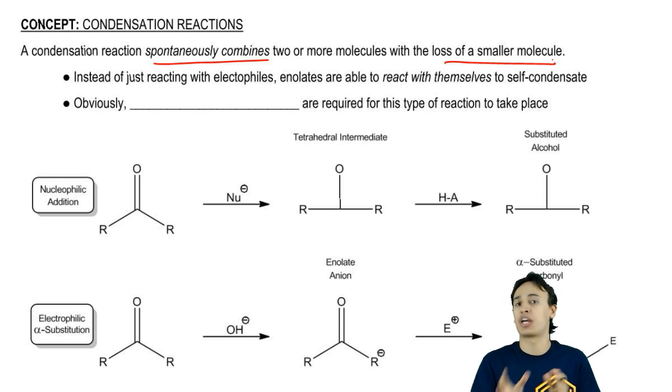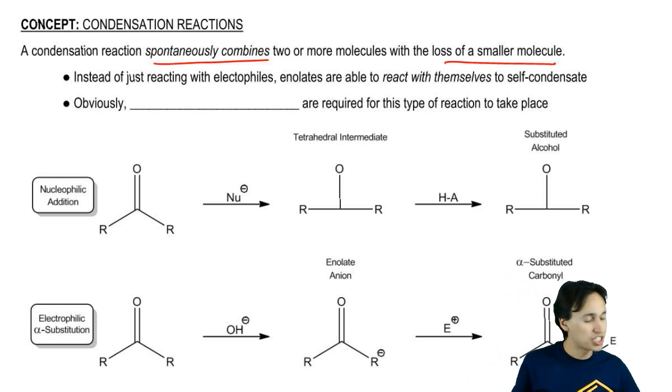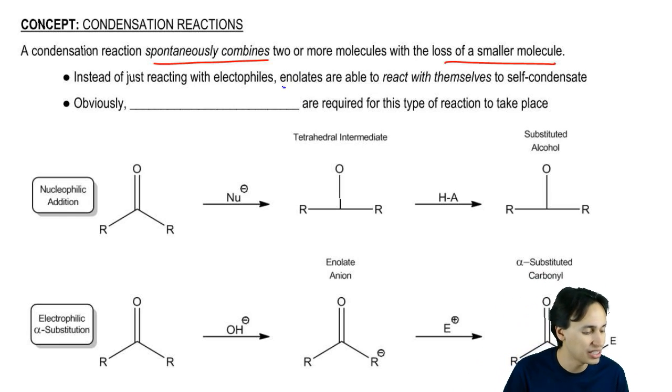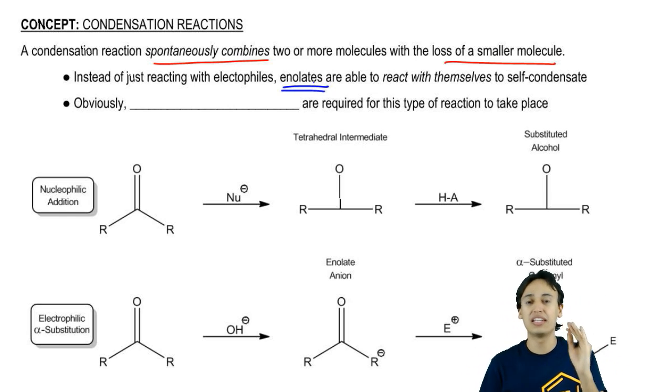There's actually tons of different types of condensation reactions in organic chemistry, but the specific ones that we'll be dealing with in this section have to do with enolates. Remember that enolates are the negative anions of a deprotonated alpha carbon.